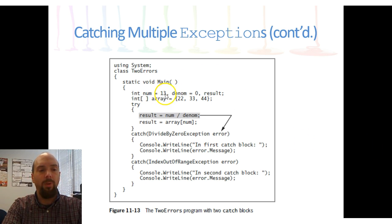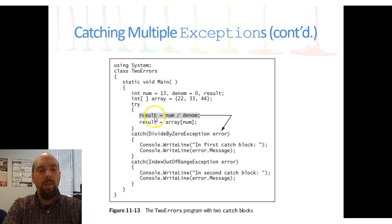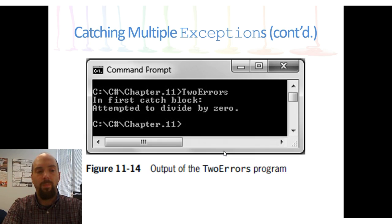In this example, we take the number 13 and try to divide by zero. As soon as this causes an error, it immediately exits the try block and goes to the exception. We have multiple catch blocks to catch different types of errors. We have a DivideByZeroException called 'error,' and an IndexOutOfRangeException also called 'error.' Depending on which one is caused, it goes to the appropriate catch block. So when we try to divide by zero, the system knows it's a DivideByZeroException and goes to that catch block, displaying the message.